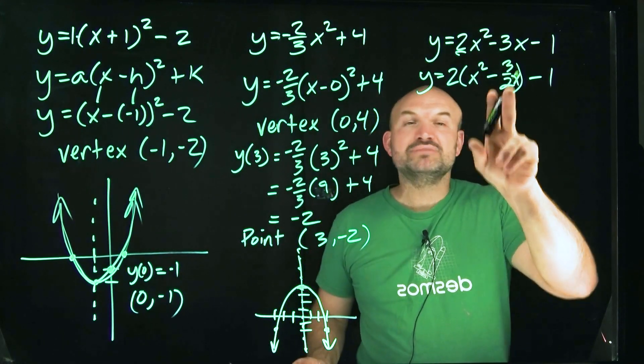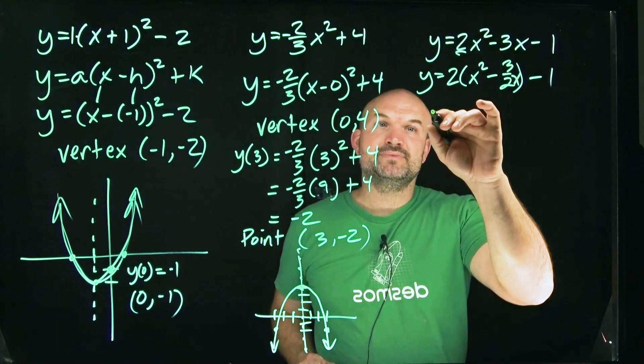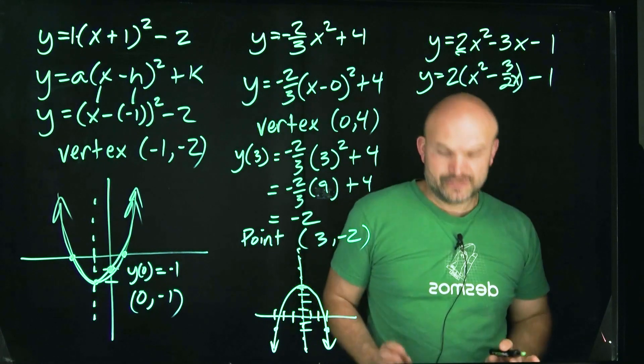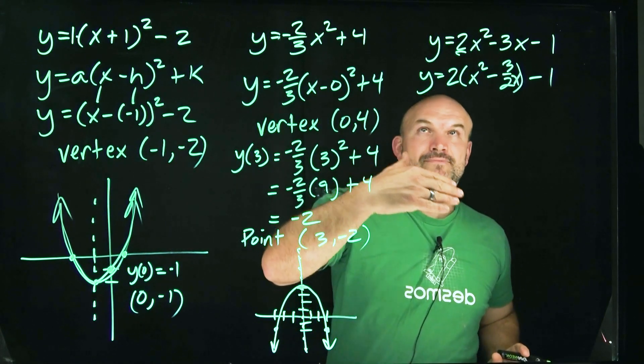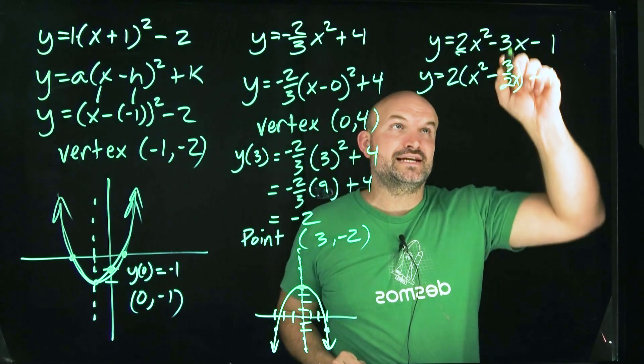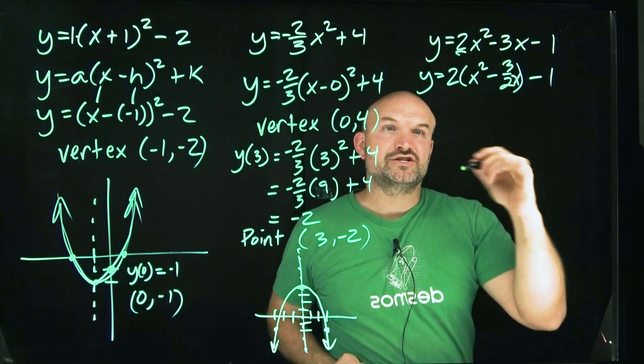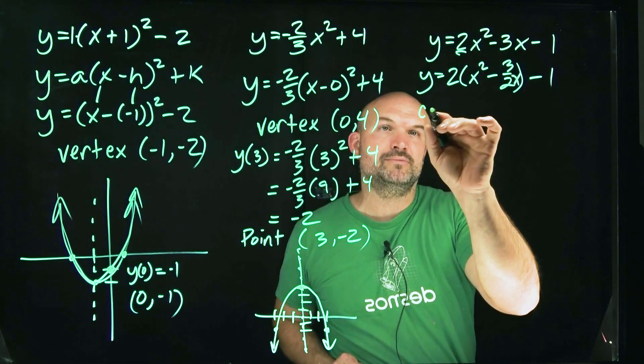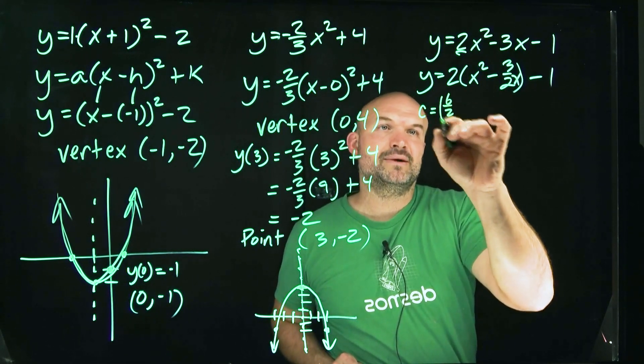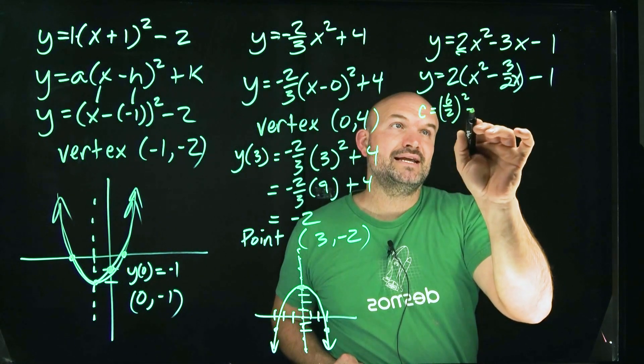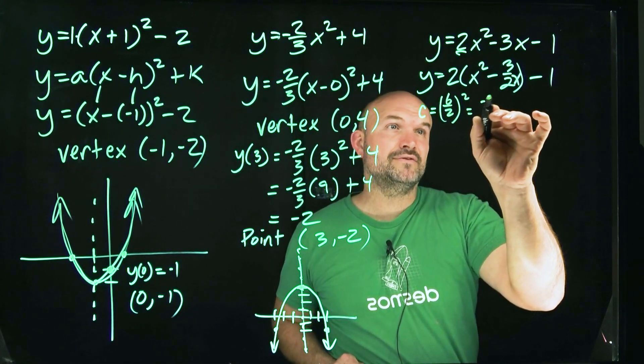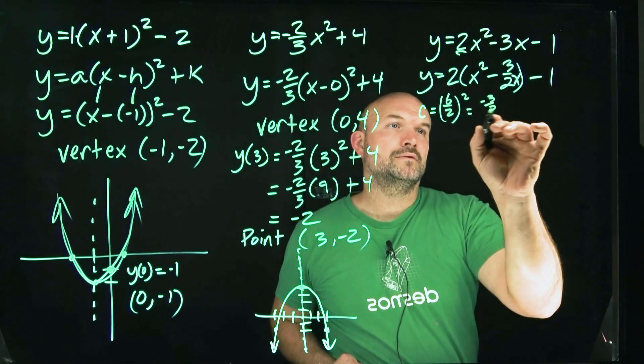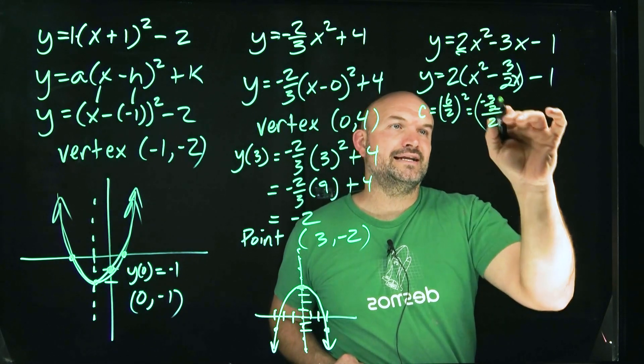Now what I need to do is find the value that completes the square here. That is going to be your b. And remember to find your c, what you're going to do is take your b divided by 2 and then square it. So c, which is going to be the value that completes the square, that makes us a perfect square trinomial, is going to be b divided by 2 squared. So in my case, I have negative 3 halves divided by 2, and I need to square that.